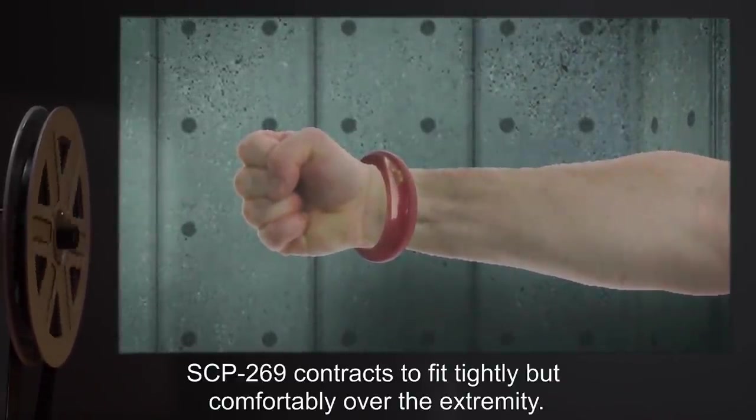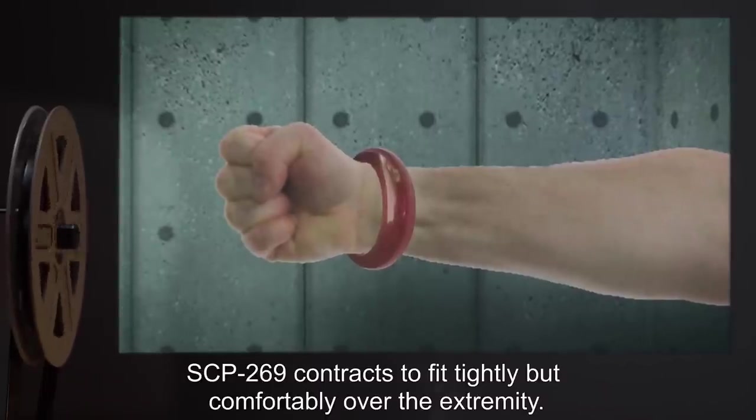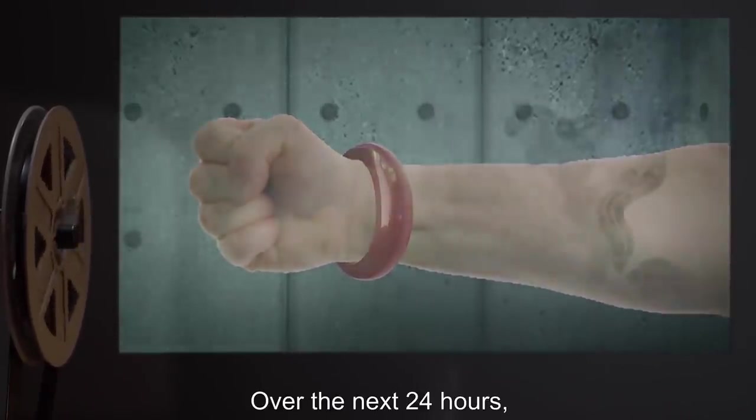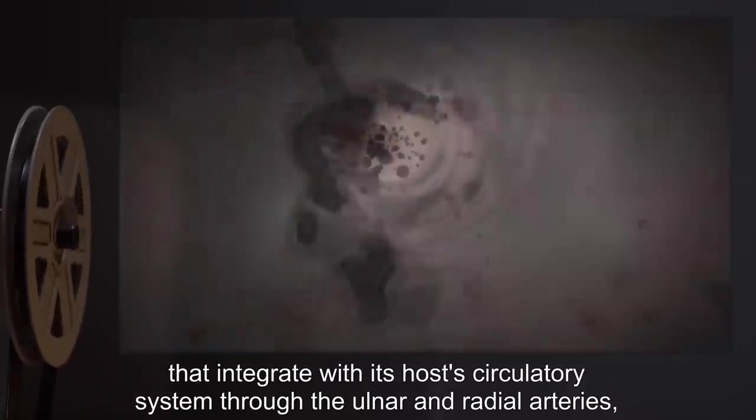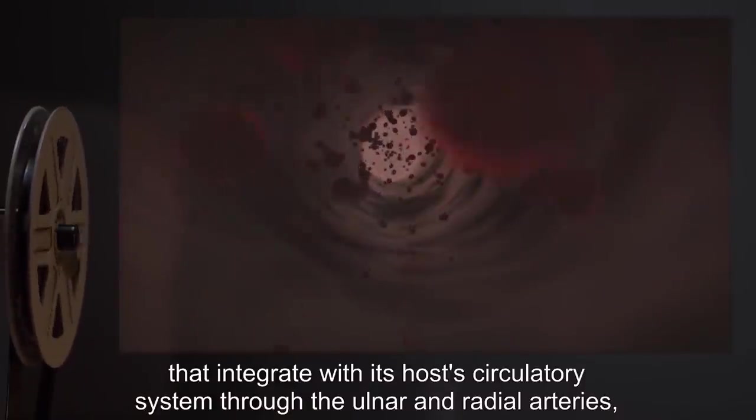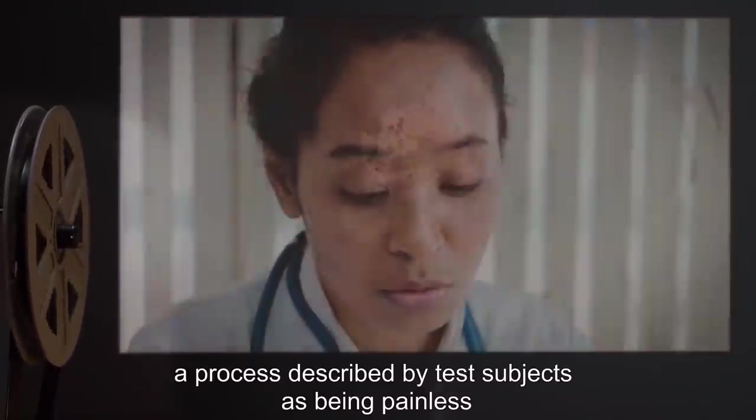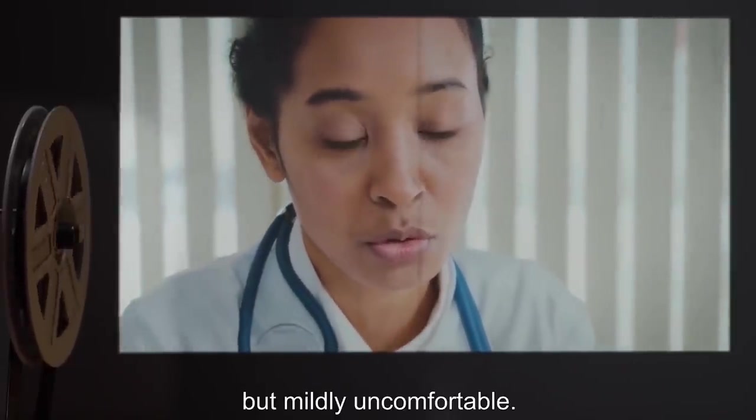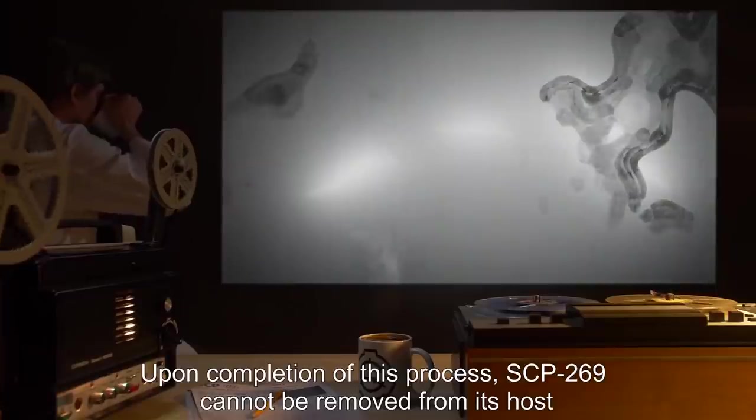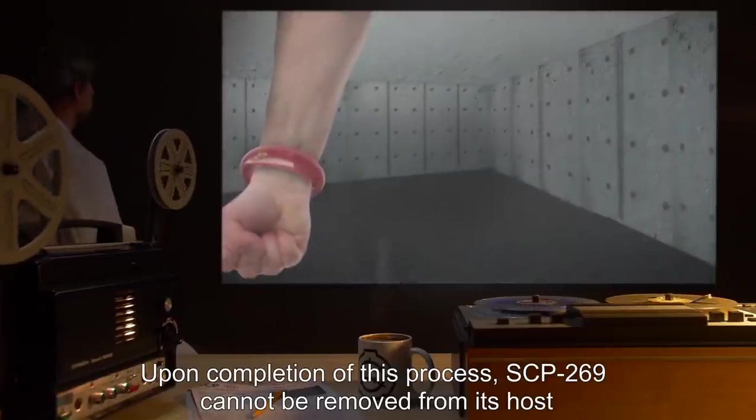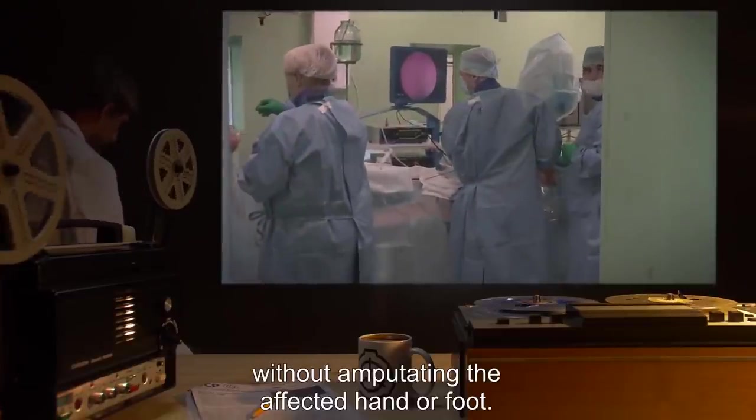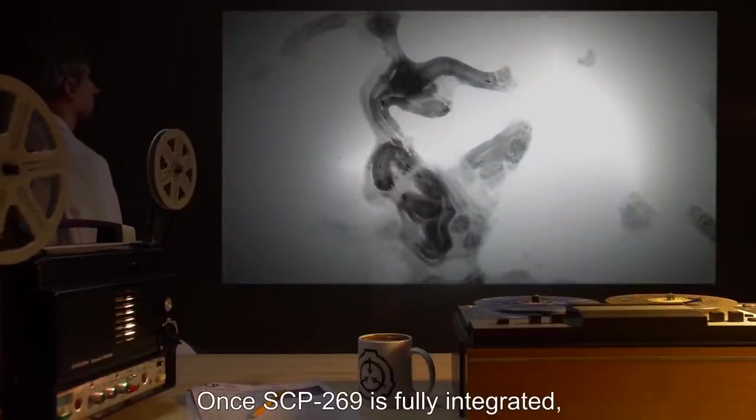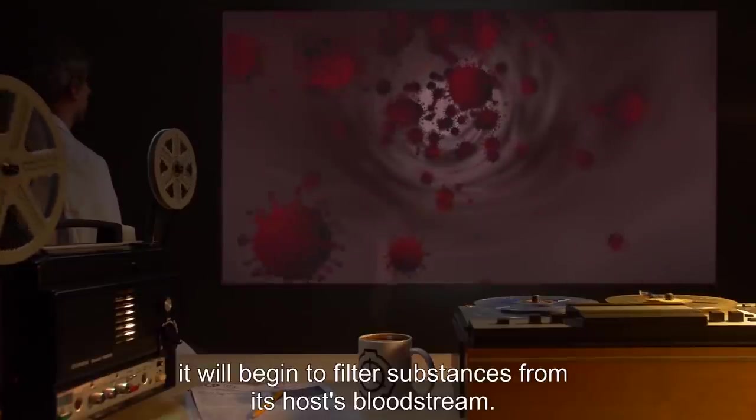When placed on the wrist or ankle of a living human subject, SCP-269 contracts to fit tightly but comfortably over the extremity. Over the next 24 hours, SCP-269 extends flexible tendrils that integrate with its host's circulatory system through the ulnar and radial arteries, a process described by test subjects as being painless but mildly uncomfortable. Upon completion of this process, SCP-269 cannot be removed from its host without amputating the affected hand or foot.